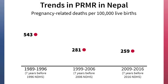Looking only at these numbers, we would probably think that pregnancy-related mortality declined from 1996 to 2016, with a dramatic decrease between the 1996 and 2006 surveys and a small decrease between the 2006 and 2016 surveys. However, this interpretation may change once we examine the confidence intervals.